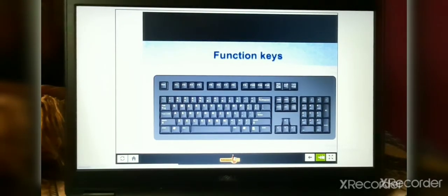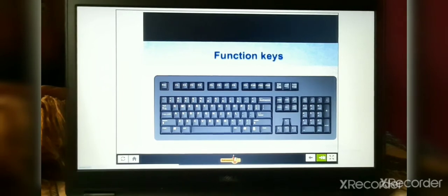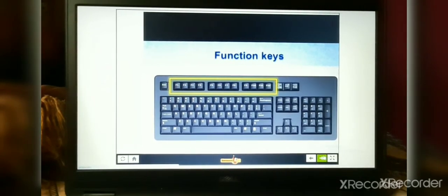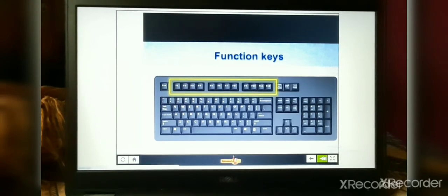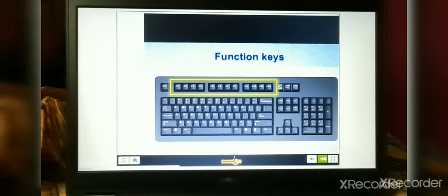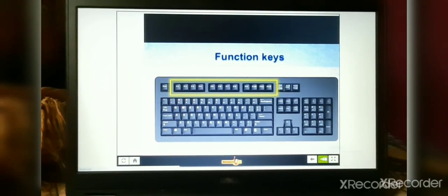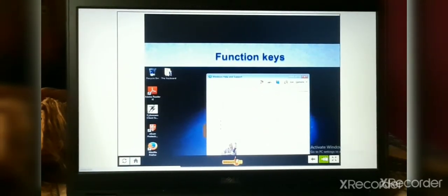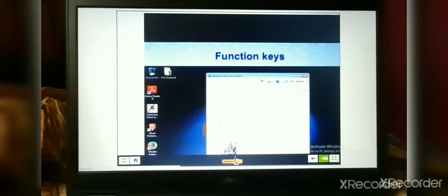The keys marked F1 through F12 are called function keys. These keys are placed at the top of the keyboard. They are used to perform special functions and also work as shortcut keys. For example, if the F1 key is pressed, the help window appears.